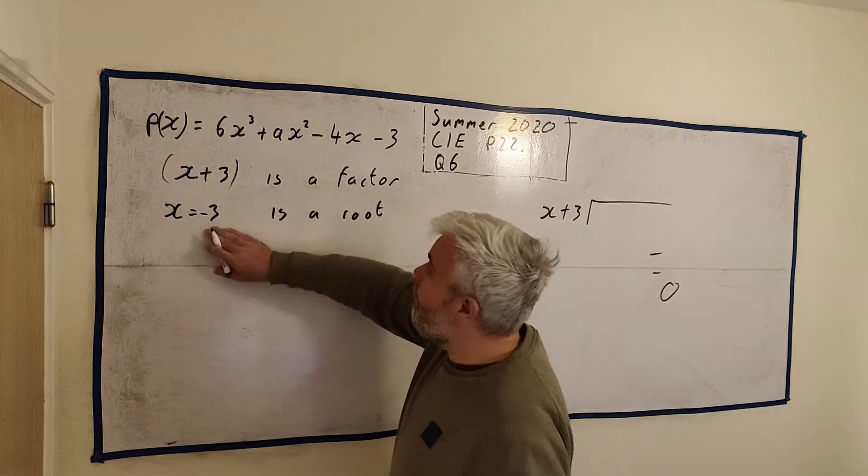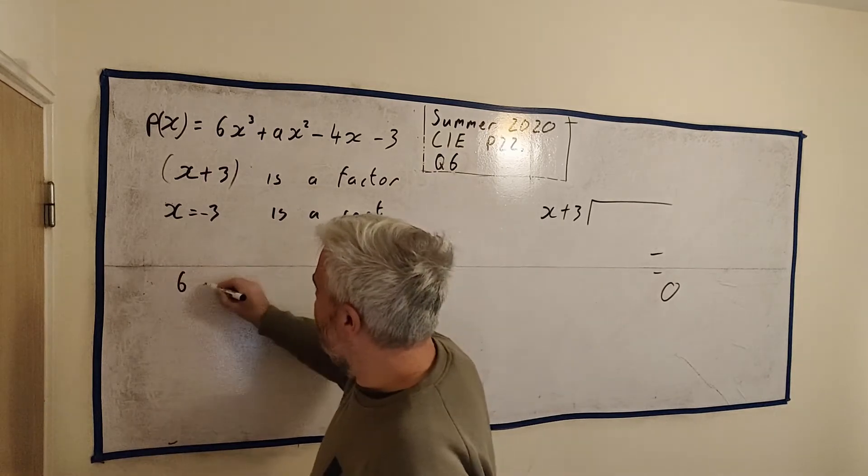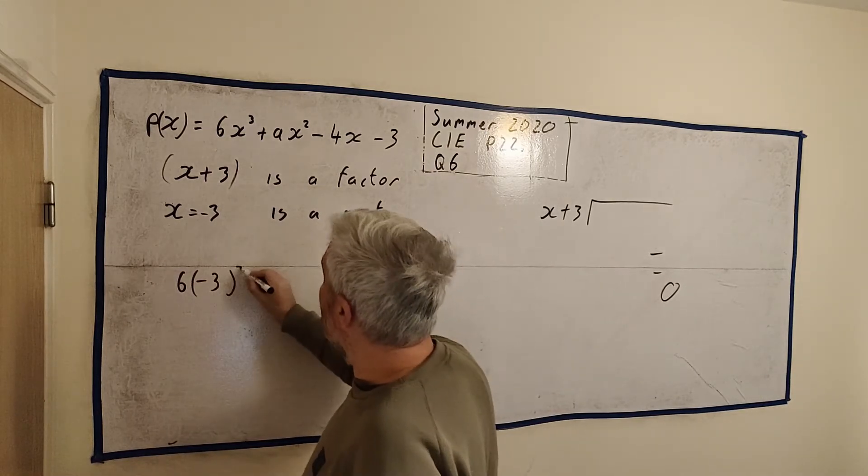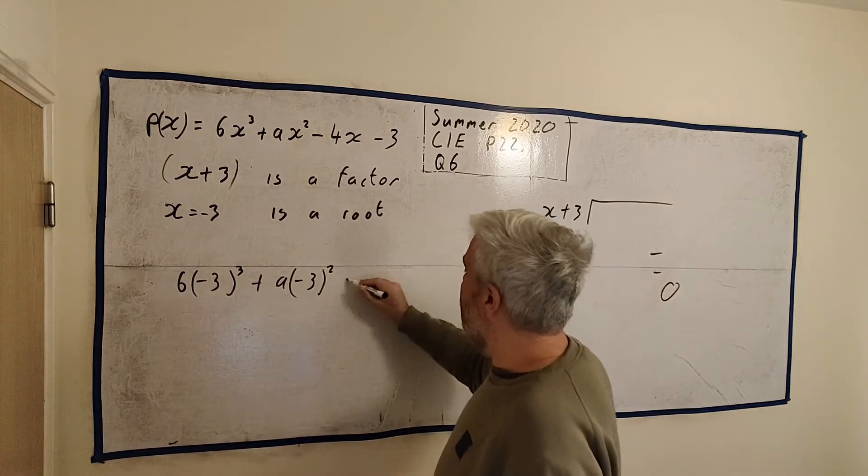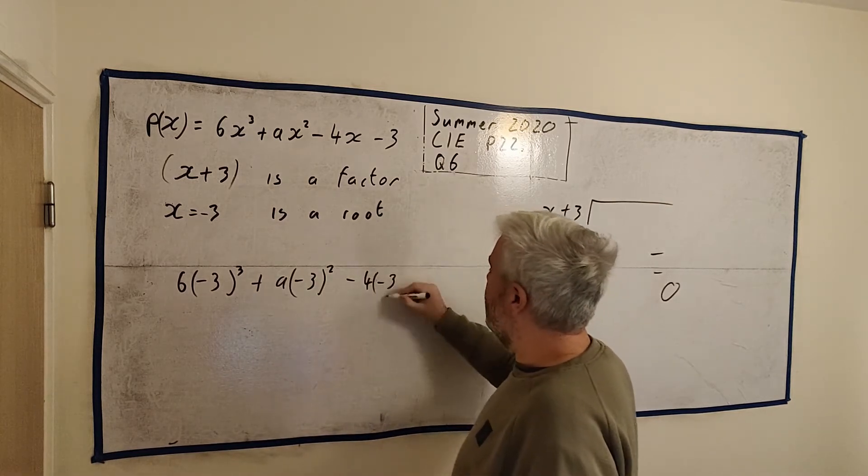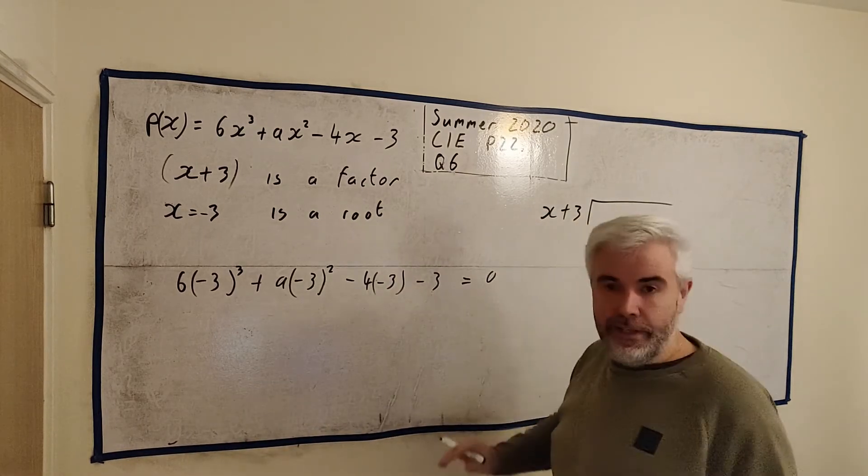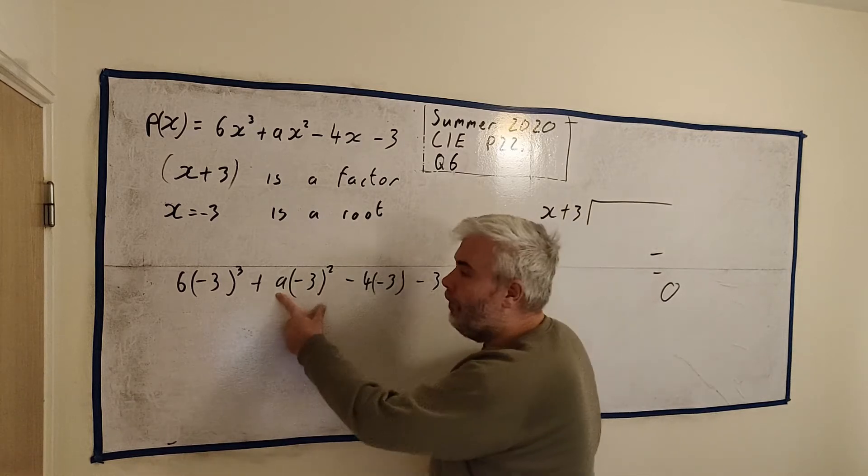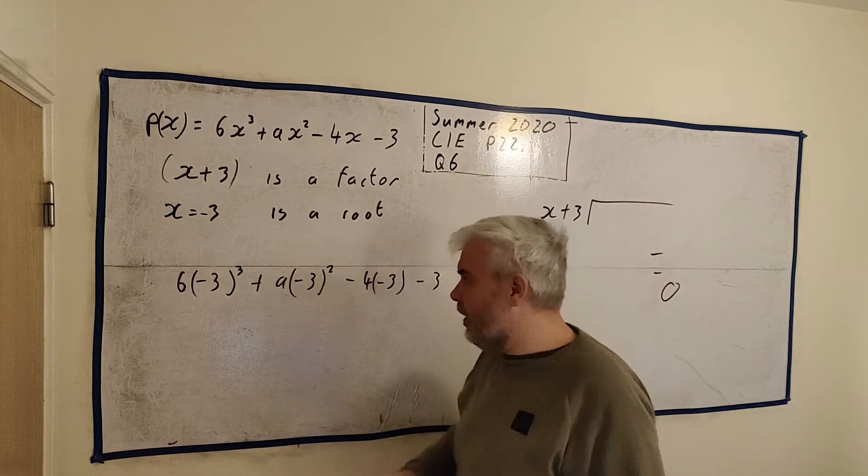So if we go ahead and put minus 3 in instead of x throughout this equation, let's write that out. 6 times minus 3 cubed plus a times minus 3 squared, minus 4 times minus 3, minus 3 at the end. That will equal 0. So now we have an equation, there's only one unknown. So it's really just about putting the numbers in. Go ahead, use a calculator.